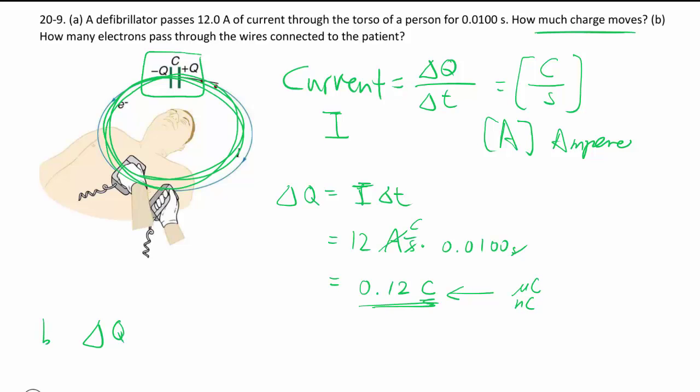And then for part B, they want us to find out how many electrons. So that's just converting the Coulombs into number of electrons, and the conversion factor is, of course, that for the elementary charge.